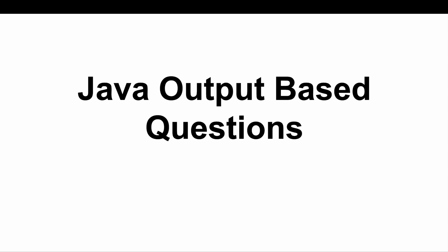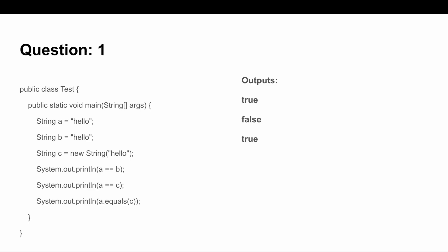Let's get started with question number one, which is related to strings. Here you see I have taken strings a, b, and c, and we are comparing these strings with double equals (==) and the equals() method. The output is true, false, and true. The first two strings a and b are string literals, and c is created with the new keyword, so it is an object.